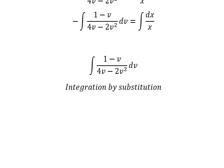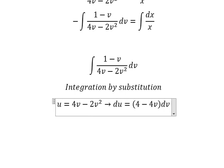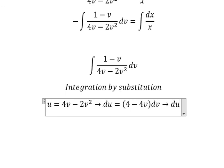So I will put u equal to 4v minus 2v². Later, we need to do the derivative for both sides, and we have du = (4 - 4v)dv. Because we don't have the 4, we divide both sides by 4.